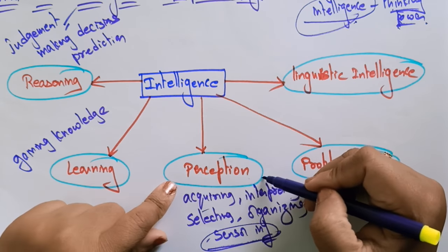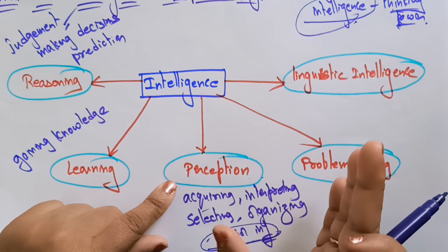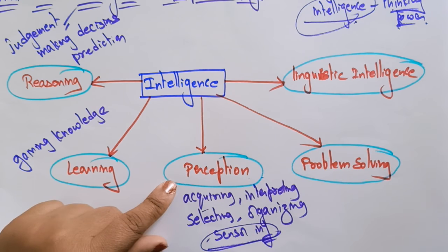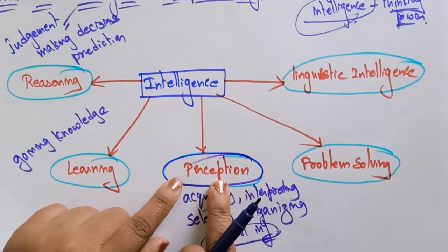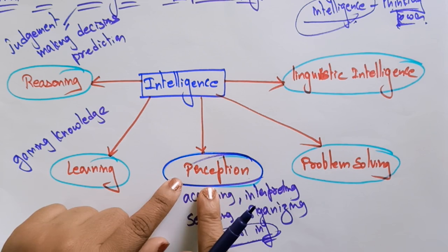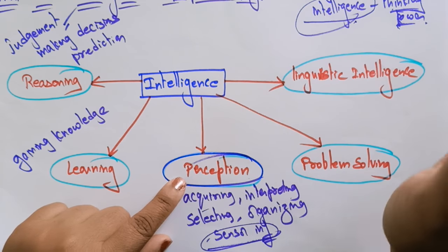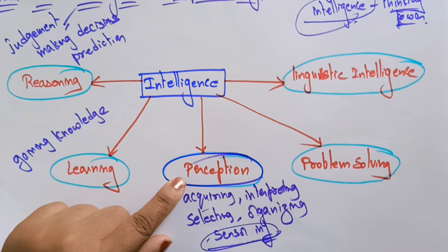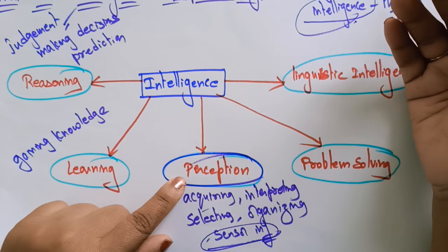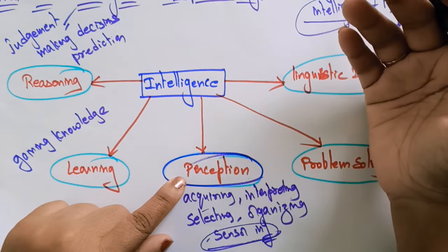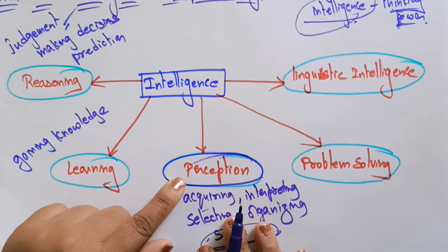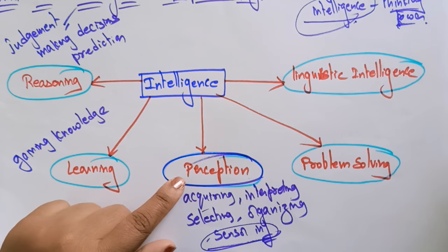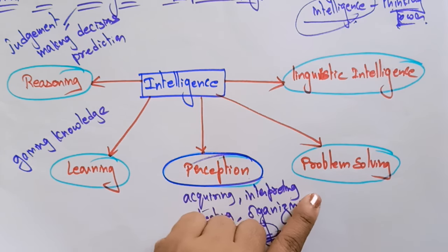Whereas in the field of artificial intelligence, perception is a mechanism that puts the data acquired by sensors together in a meaningful manner. So in the view of humans, perception involves sense organs, while for artificial intelligence, perception is a mechanism that puts sensor-acquired data together in a meaningful manner.